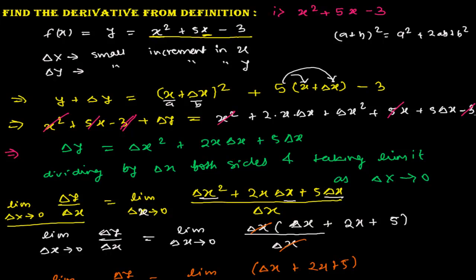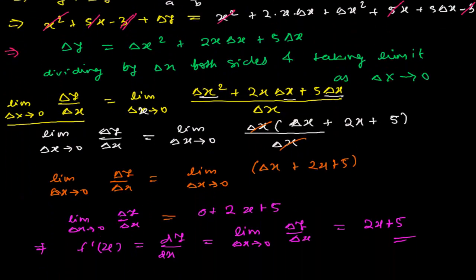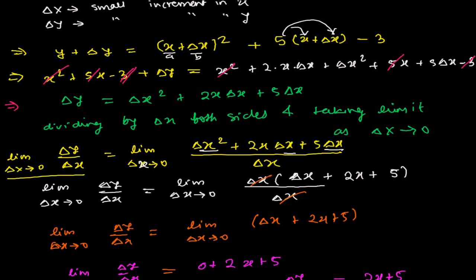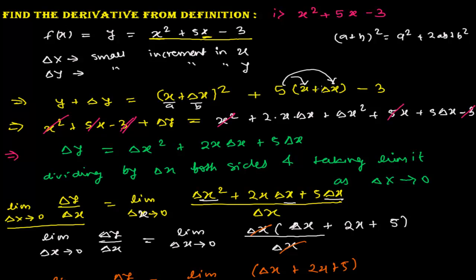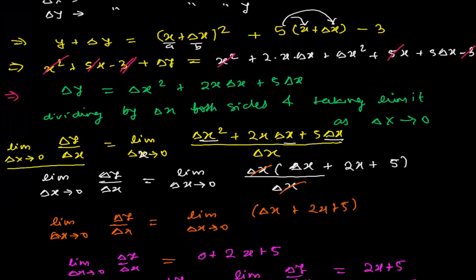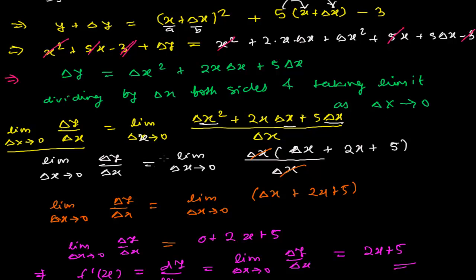So this is how we find the derivative from the first principle, or definition method. The general procedure is: start with y equals your function, take a small increment Δx in x and Δy in y, change the variables accordingly, substitute the known value of y, and some terms will cancel out, leaving your equation in terms of Δy and Δx.